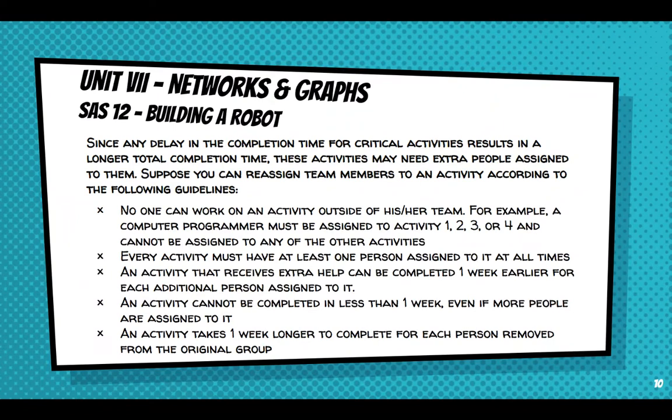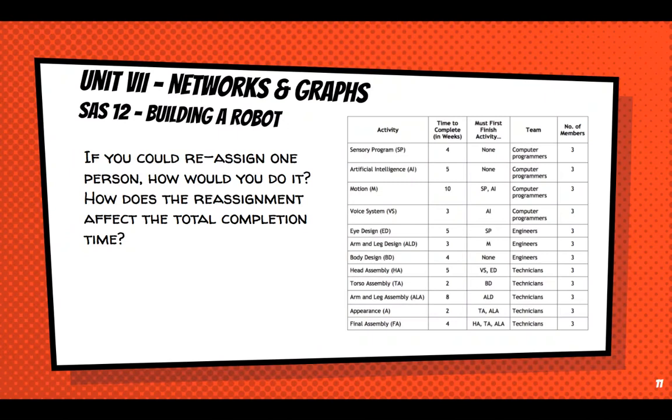All right. Since any delay in the completion time for critical activities results in a longer total completion time, these activities may need extra people assigned to them. Suppose you can reassign team members when they're finished with the activities already on to an activity according to the following guidelines. No one can work on an activity outside of his or her team. So computer programmers can't work in engineering fields. Engineers can't work in technicians. Technicians can't work in computer programmer engineering and so on. For example, a computer programmer must be assigned to activities one, two, three, or four, all the ones that have computer programmer, and cannot be assigned to any of the other activities. Now, every activity must have at least one person assigned to it at all times. Can't go forward if you're not working on an activity. An activity that receives extra help can be completed one week earlier for each additional person assigned to it. And then an activity cannot be completed in less than one week, even if more people are assigned to it. And finally, an activity that takes one week longer, or an activity takes one week longer to complete for each person that's removed from the original group.